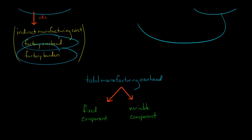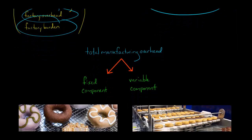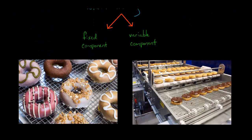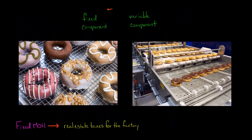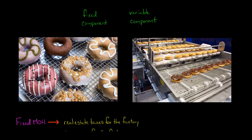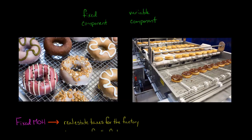Let's say that you want to start manufacturing a product — a food product — that is going to be a healthy alternative to pizza and ice cream. So you start manufacturing donuts. You've got a donut factory here, making these beautiful donuts to help people lose weight.